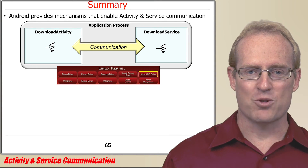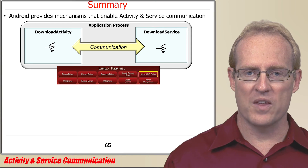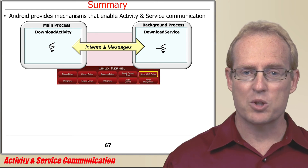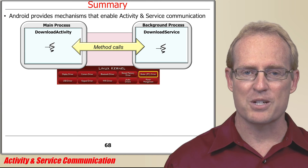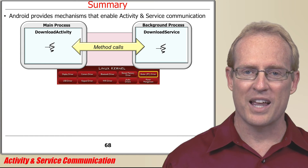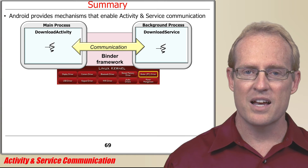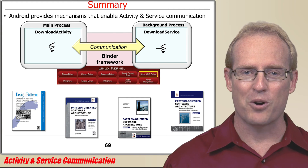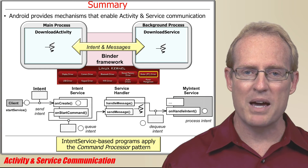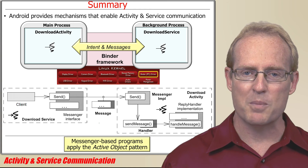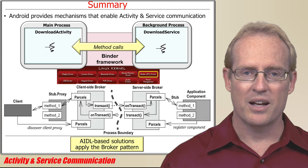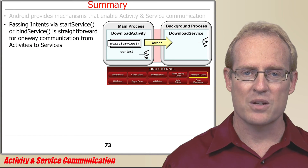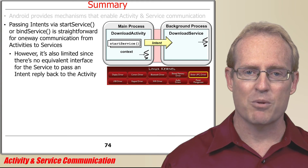In summary, Android provides a range of mechanisms that enable activities and services to communicate within the same process or across different processes. This part of the module summarized mechanisms for passing intent commands and messages between activities and services, as well as invoking method calls synchronously or asynchronously between activities and services using the Android Interface Definition Language. When activities and services reside in different processes, these mechanisms use the Android binder framework to communicate efficiently. These communication mechanisms also apply various Gang of Four and POSA patterns. Passing intent commands via startService or bindService is an easy way to communicate from an activity to a service, though this approach is limited since it doesn't enable the service to pass an intent reply back to the activity.